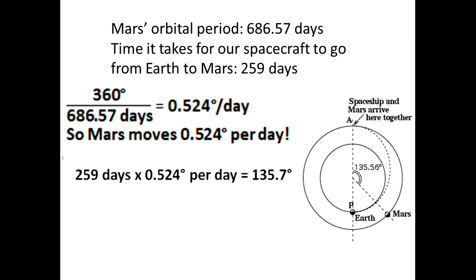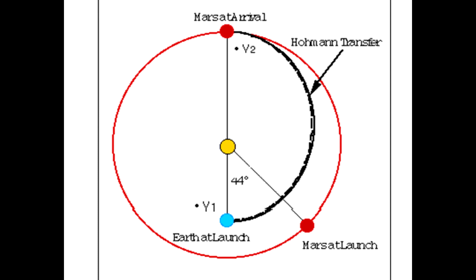And lastly, to find the angle that Mars has to be ahead of Earth at the time of the launch, I subtract 135 degrees from the final position. So that's 180 degrees minus 135.7 degrees, and that gives us the angle 44.3 degrees. And 44 degrees is the angle that Mars has to be ahead of Earth in its orbit in order for our spacecraft and Mars to arrive at the same place and same time.